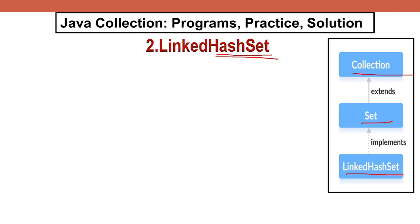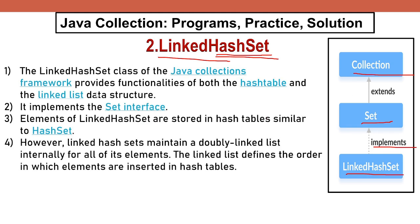In this video I will discuss LinkedHashSet, which is the second implementation class of the Set interface. LinkedHashSet provides the functionality of both a hash table and a linked list. When we create an object of LinkedHashSet, it does not allow duplicates, but insertion order is preserved because it internally uses a linked list data structure.